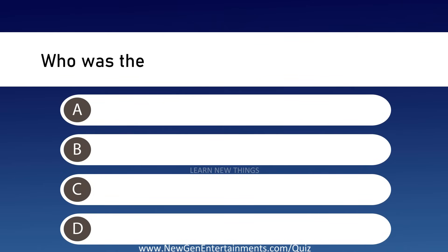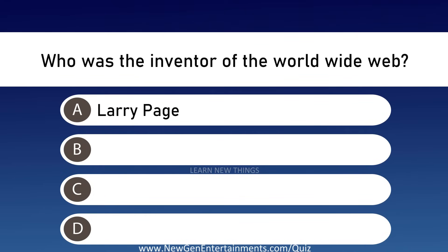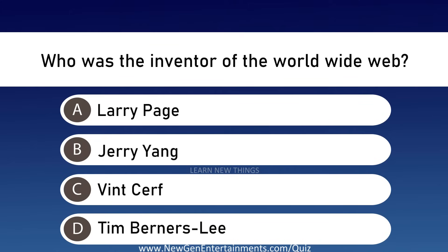Who was the inventor of the World Wide Web? Options are A: Larry Page, B: Jerry Yang, C: Windsurf, and D: Tim Berners-Lee.